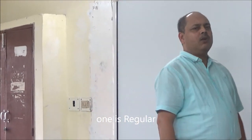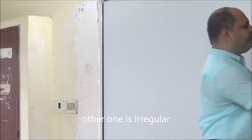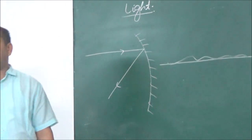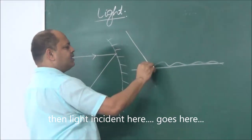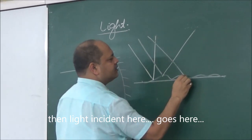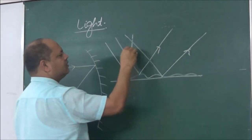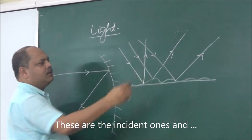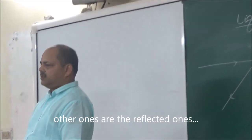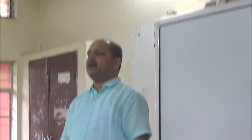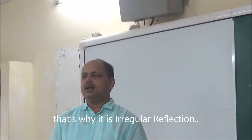Reflection is of two types: one is regular, and one is irregular. If the surface has an irregular face — a rough face — then light incident here goes in one direction, light incident at another point goes in a different direction, and light incident elsewhere goes in yet another direction. No regular pattern is observed, and that is why it is called irregular reflection.